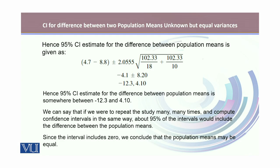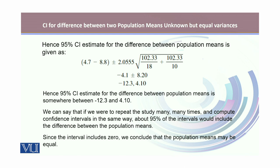The 95% confidence interval for the difference between population means is given by 4.7 minus 8.8, plus or minus 2.056 times the standard error of the estimate. Solving this gives two values: −12.3 and 4.10. We can say that if we were to repeat the study many times and compute the confidence interval in the same way, about 95% of the intervals would include the true difference between the population means. Since the interval includes 0, we can conclude that the population means may be equal.